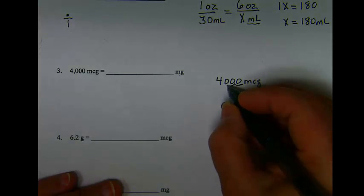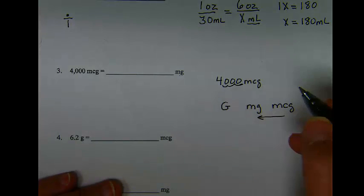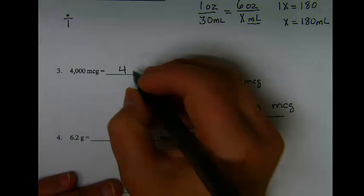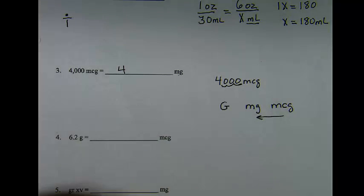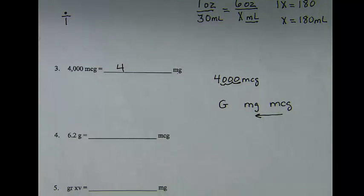1, 2, 3 places. So 4000 micrograms is the same as 4 milligrams.